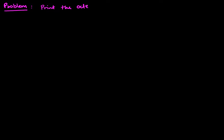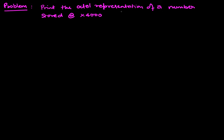Let's take a look at a problem we can solve using subroutines. The problem is to print the octal representation of a number stored at x4000, and our program itself is going to run at x3000. We'll do what we normally do when solving a problem, which is a top-down decomposition.